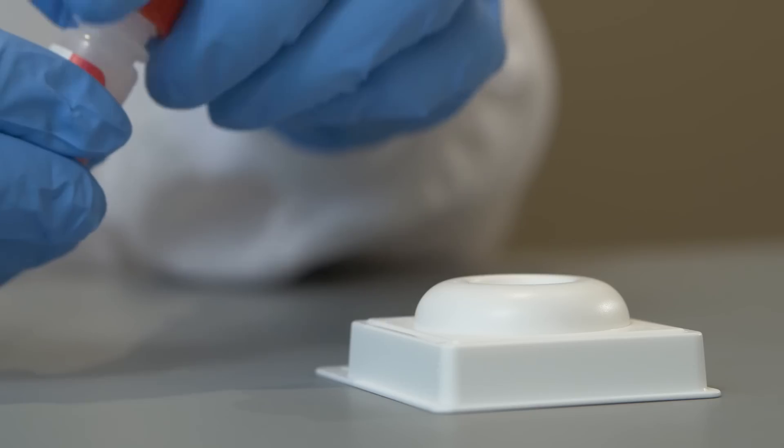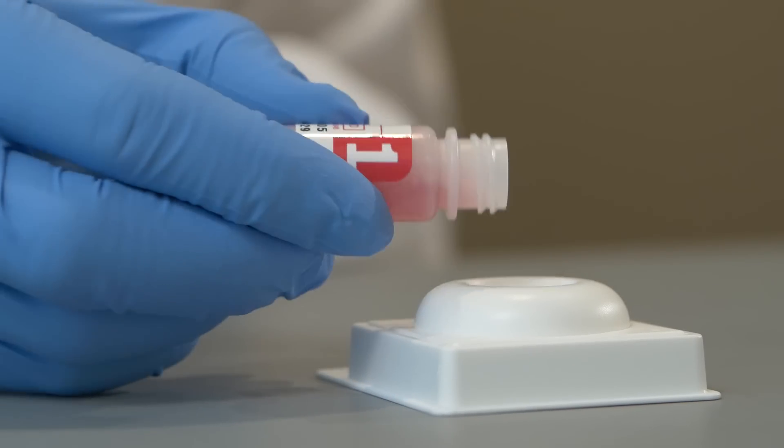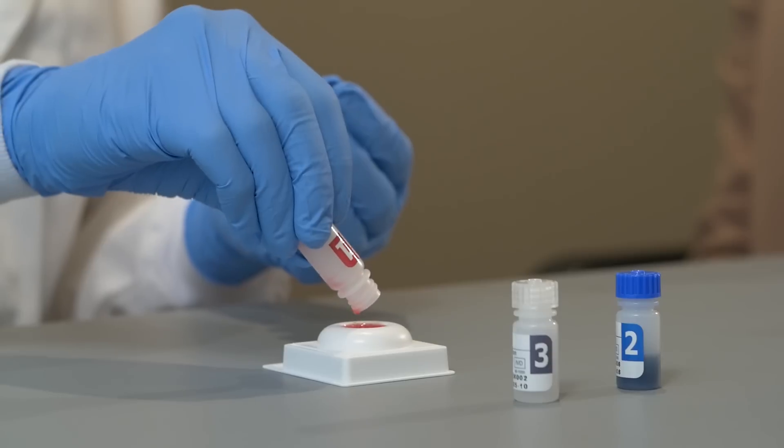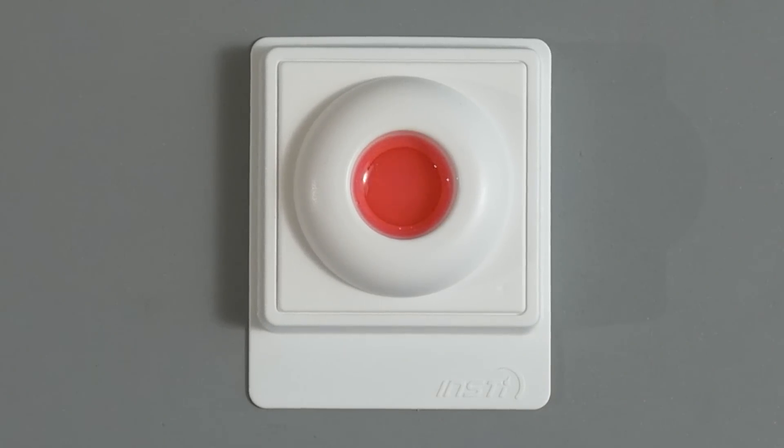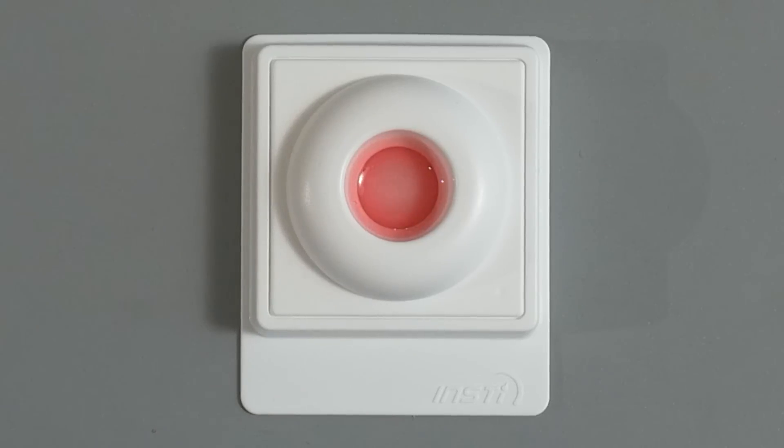Open the sample diluent and pour the entire contents into the centre of the membrane unit well. The sample should be absorbed quickly. Wait for all the liquid from bottle number one to be absorbed completely.